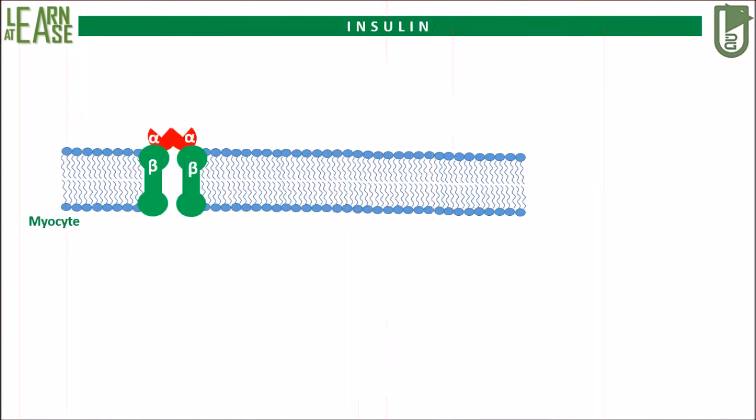To understand this mechanism, we will consider the muscle cell as the target tissue. In the animation, the insulin receptor is shown. For now, we will consider the condition of starvation where there is no insulin in the blood.